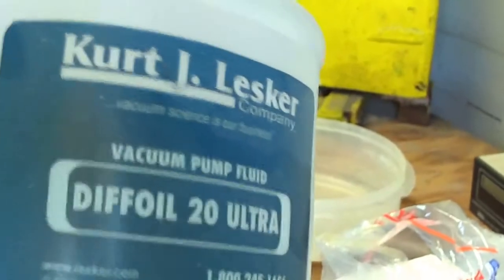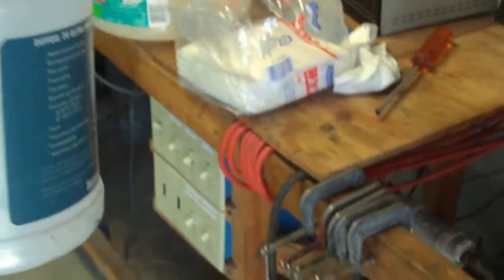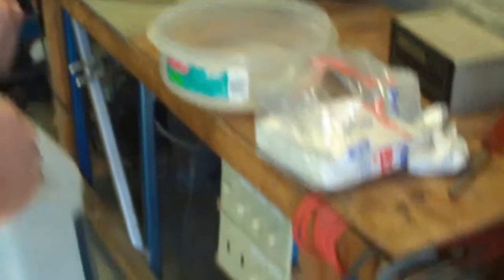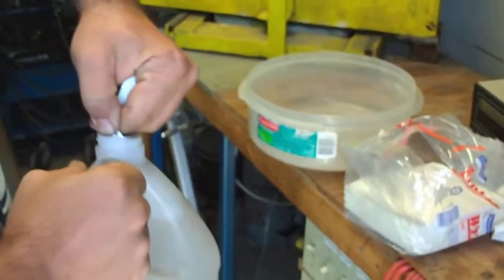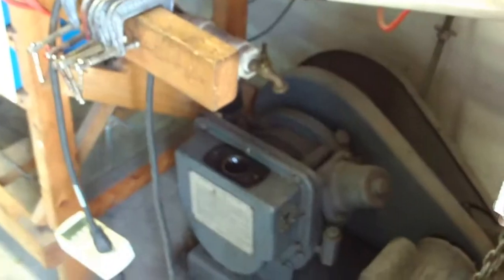The pump leaks a little bit, so we're going to pop it off. We're using Lesker's Dip Oil 20 for both the mechanical pump and the diffusion pump. Although I'm told you can't get this anymore, you can get the mechanical pump oil, but they don't like doing it for the diffusion pumps anymore.